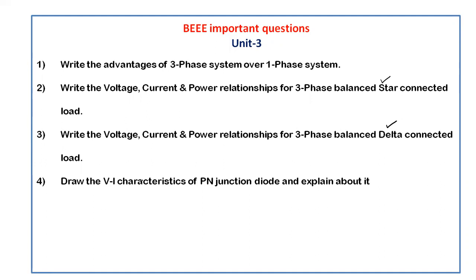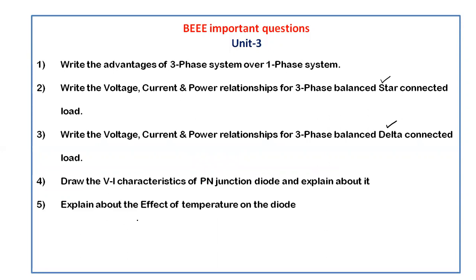For the P-N junction diode part of unit 3: draw the VA characteristics of the P-N junction diode and explain it — covering forward bias and reverse bias clearly since it is a long answer question. Next, explain the effect of temperature on the diode: how the diode behaves when temperature increases, the relevant equations, and how the characteristics change.